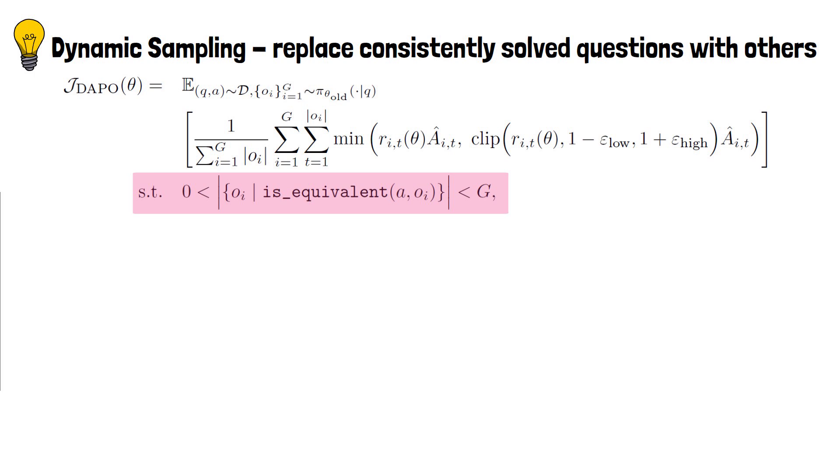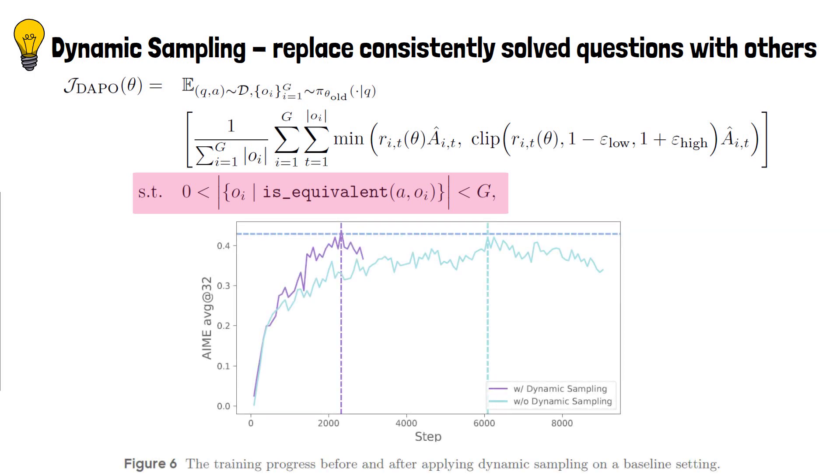Interestingly, the over-sampling does not slow down training. The following figure shows that dynamic sampling achieves the same performance as without dynamic sampling, with only a third of the training steps.